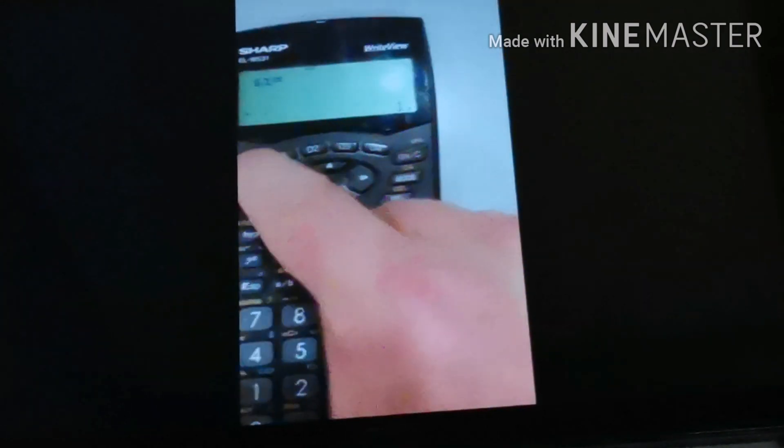If you want to do a new calculation, you need to clear the statistical memory registers. Press the orange and the green keys, 1 for memory and 0 to clear all the memories.